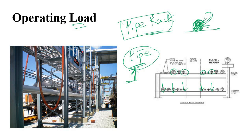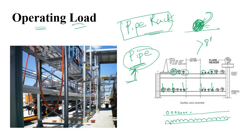Regarding operating load application: if the pipe diameters are small, you can apply a UDL based on codal provisions. However, if the pipe diameter exceeds 8 inches — which is the threshold I normally use — you should consider the individual point load for that pipe. If the diameter is less than 8 inches, applying a UDL is acceptable. Apply this based on your project requirements.